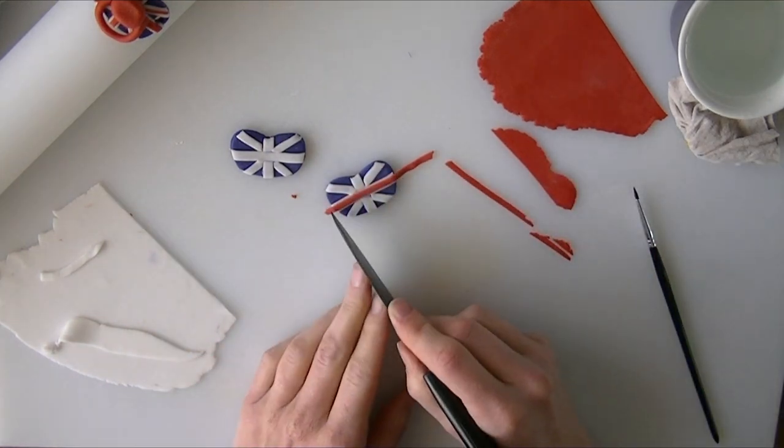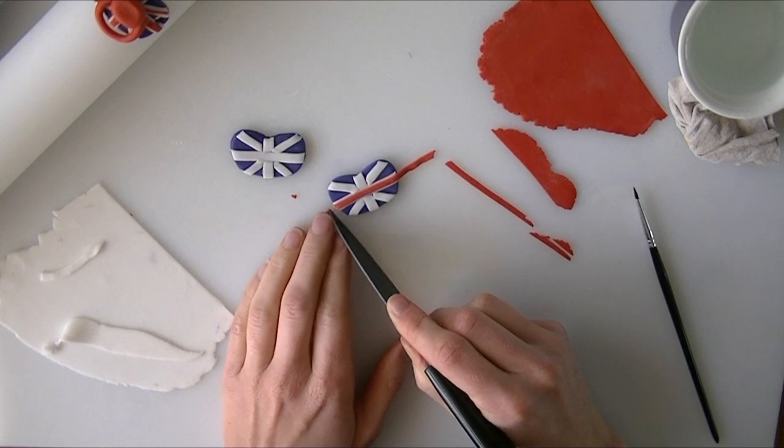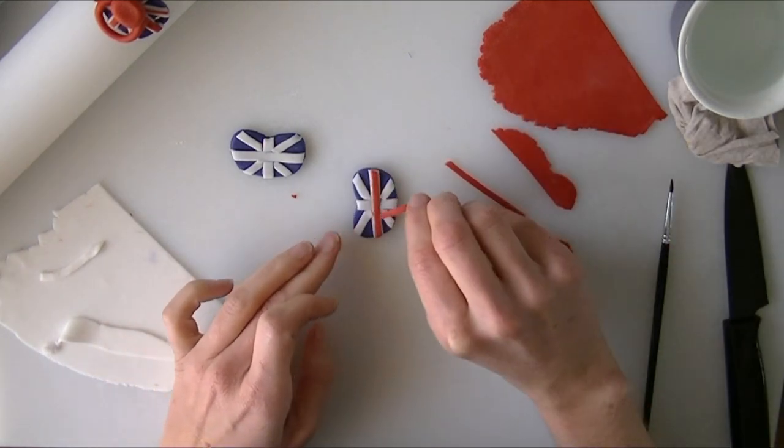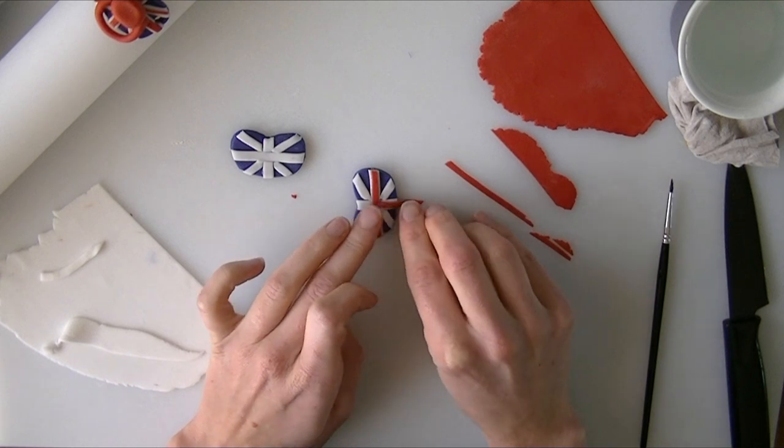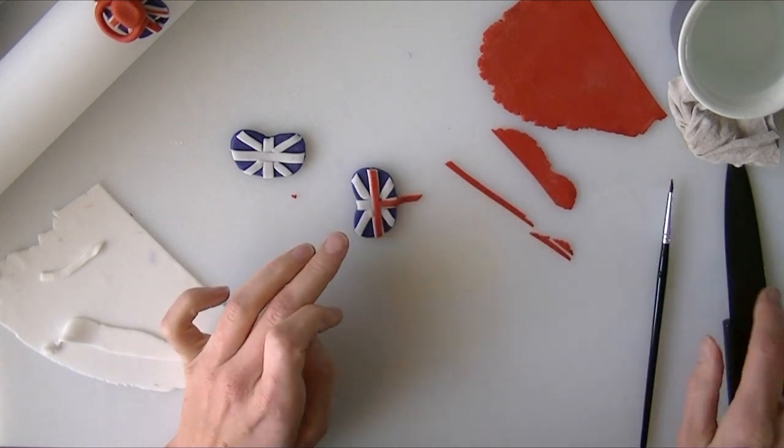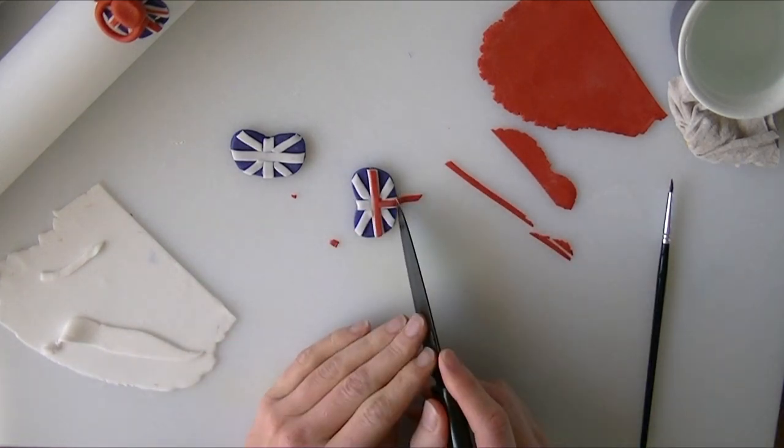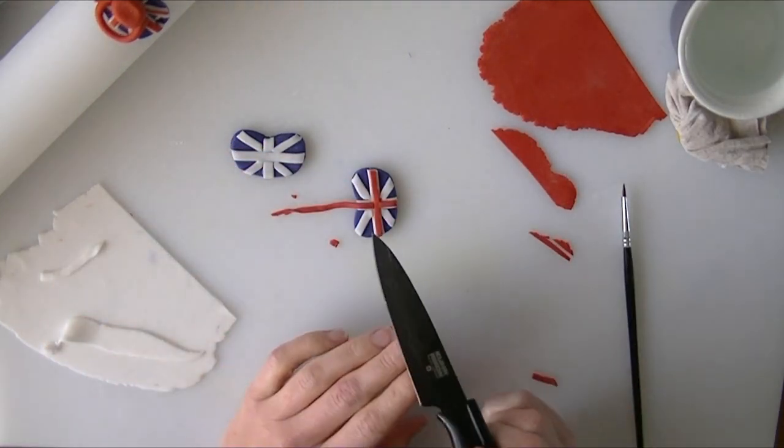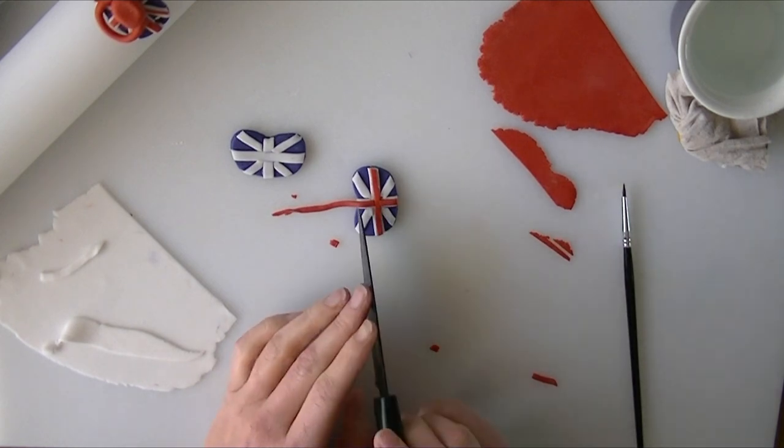You're just going to trim it off either side. Again, putting it on the bit that goes below and some more on the top bits. Try and keep them in line if you can.